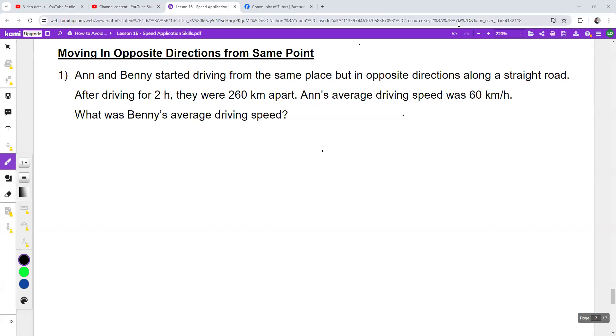Ann and Benny started driving from the same place but in opposite directions along a straight road. After driving for two hours, they were 260 kilometers apart. Ann's driving speed was 60 kilometers per hour and what was Benny's driving speed?